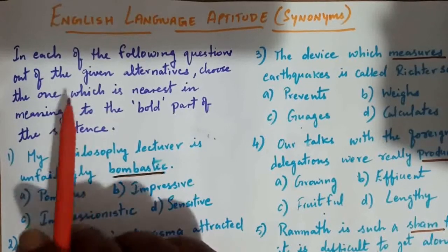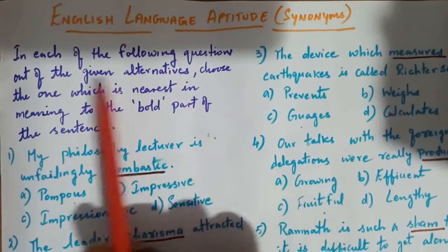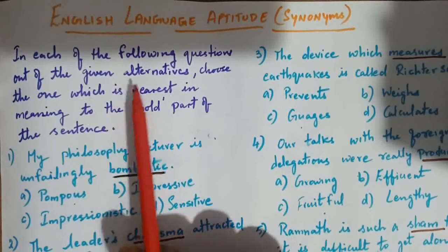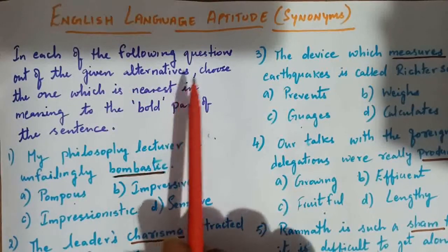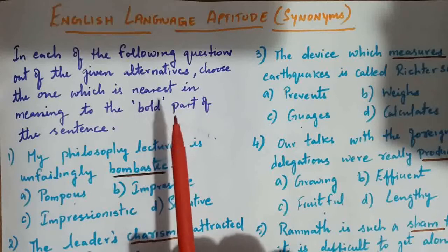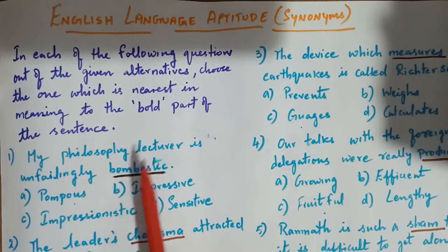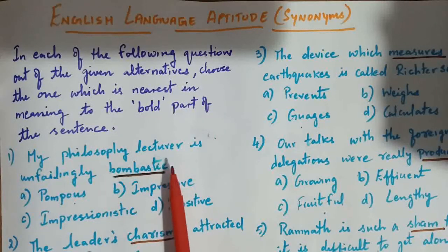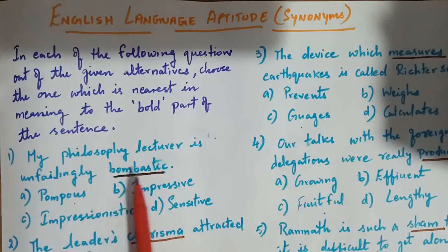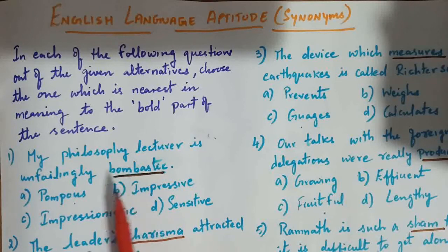In each of the following questions, out of the given alternatives, choose the one which is nearest in meaning to the bold part of the sentence. Here I have just underlined the word. We are supposed to substitute in place of that underlined word a similar word in meaning.